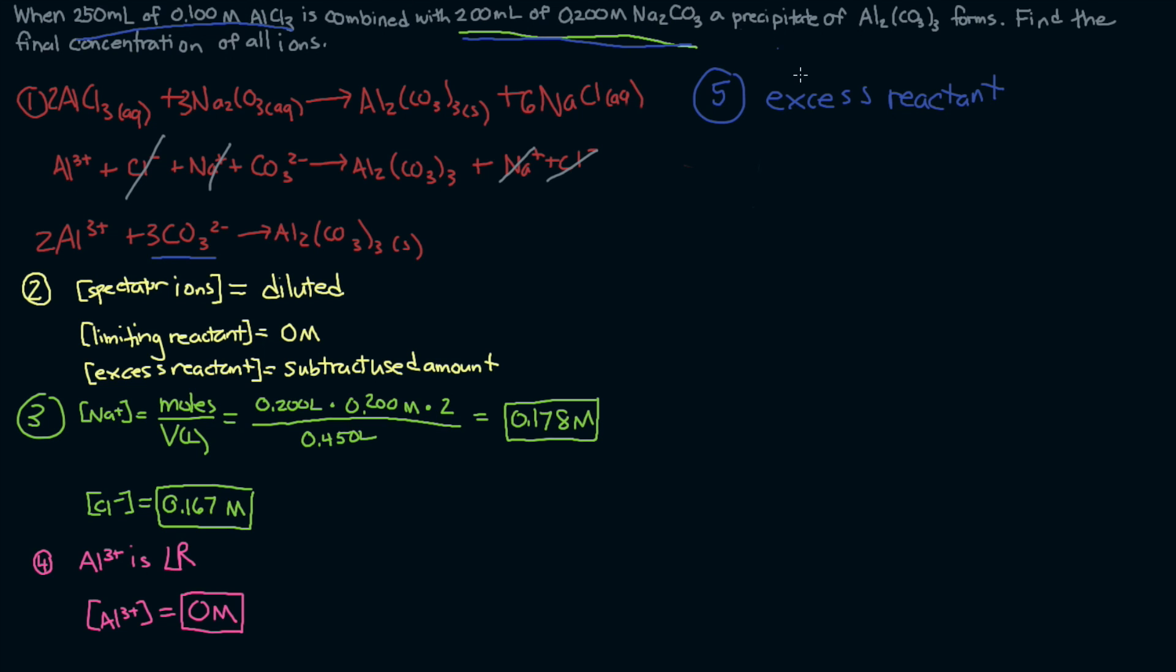Once we do that, we could subtract it from our original amount of carbonate and divide by total volume to get concentration. First step, find number of moles of the carbonate and number of moles of the aluminum. So to find the number of moles of carbonate, that will be 0.200 liters times the concentration, 0.200 molar, times, in this case, a factor of one. There's only one carbonate per sodium carbonate molecule, and that gives us 0.0400 moles.